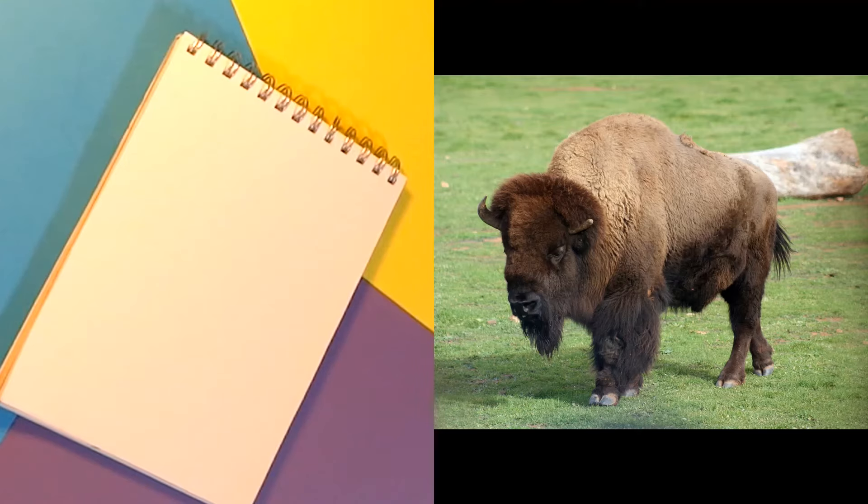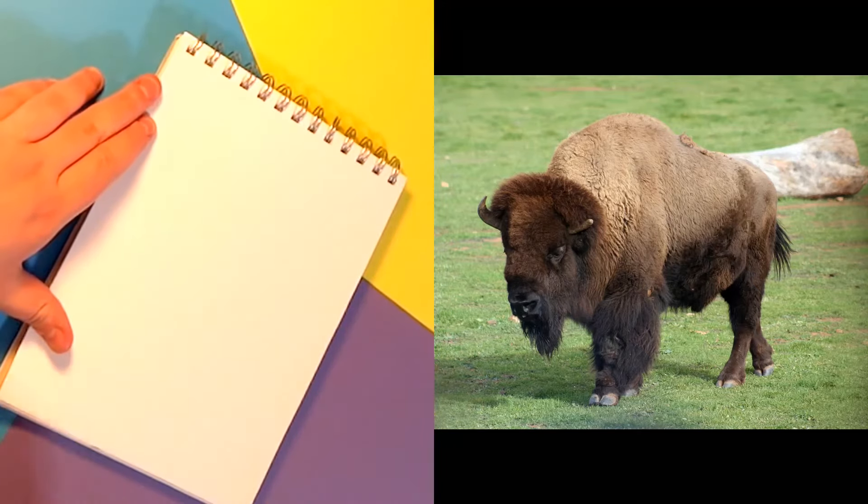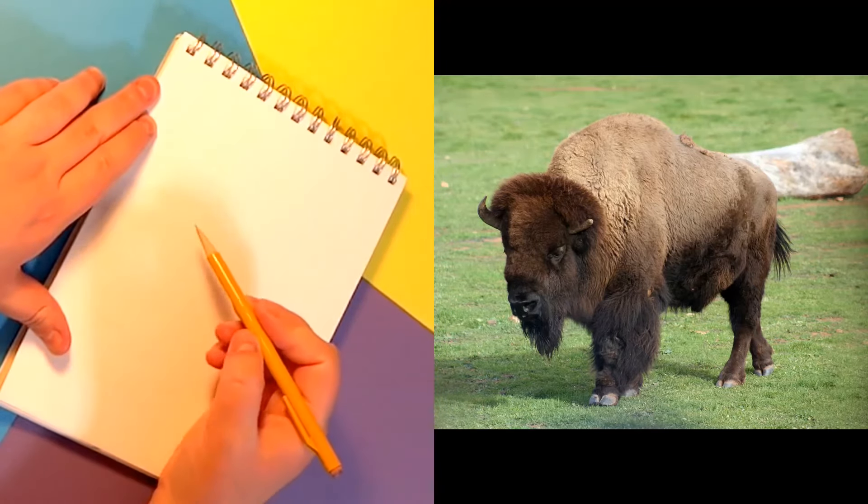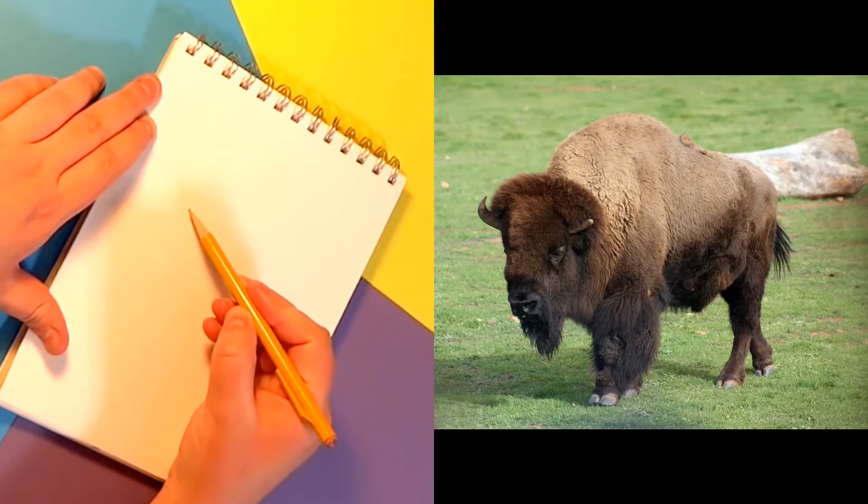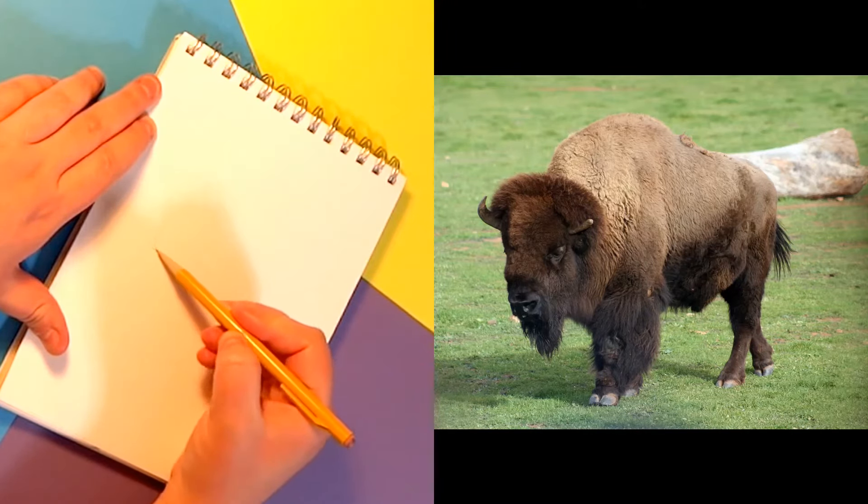These are also endangered species. We're going to start with one that is native to right around here. So what we're doing is grassland animals, and this right here is a buffalo. If you break it into shapes, you're going to want kind of an egg shape for his head.